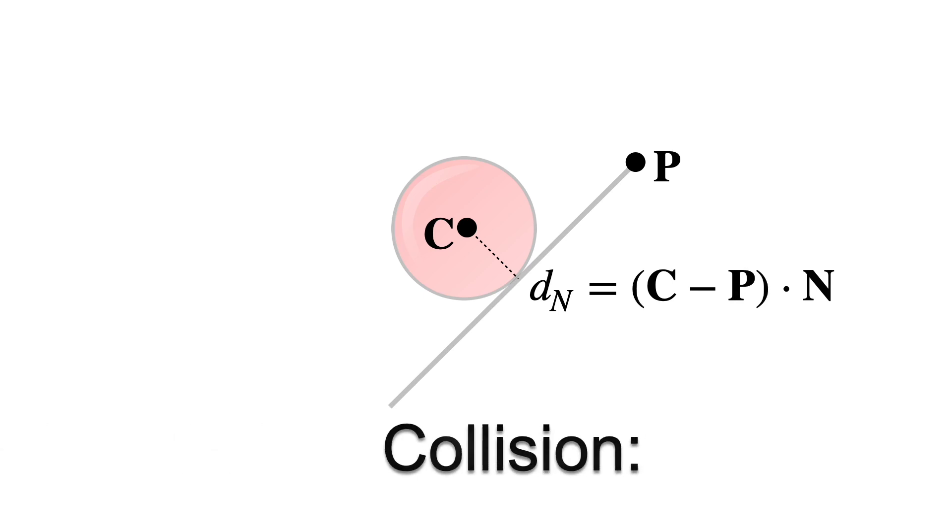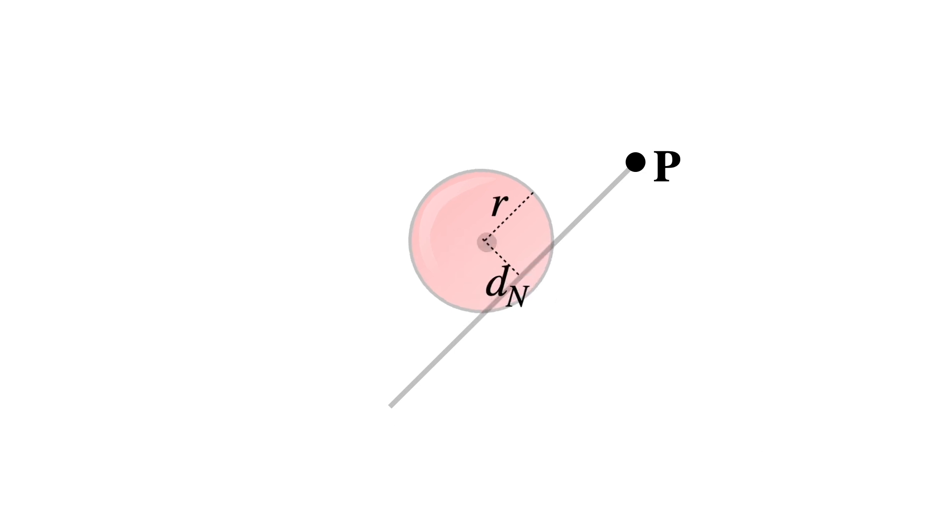You usually won't detect the collision until the next time step, when it's already slightly penetrated the surface. So you'll want to use this formula instead. And you can move the ball back to the surface by adding this vector d to the ball's position.